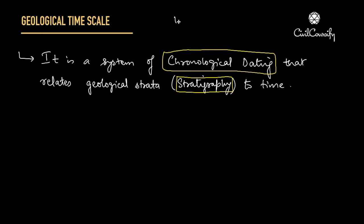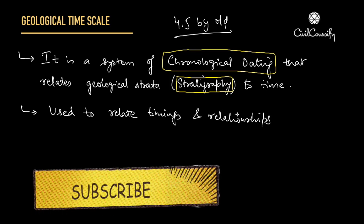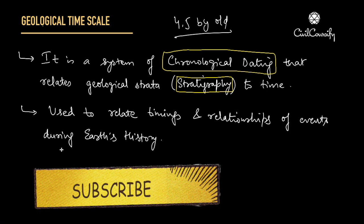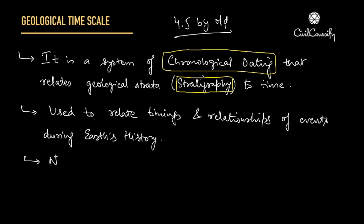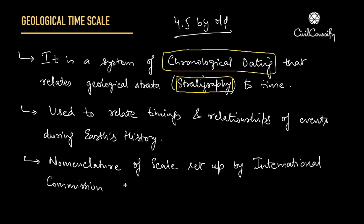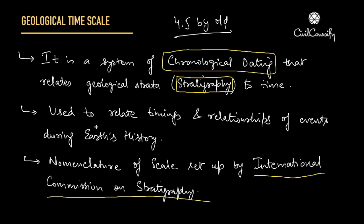Now we know that the earth is 4.5 billion years old, and this 4.5 billion years of time is divided into many brackets. We analyze those brackets in the geological time scale, which was basically used to relate timings and relationships of events during earth's history. One thing you must remember is that the nomenclatures of this scale are set up by the International Commission on Stratigraphy.